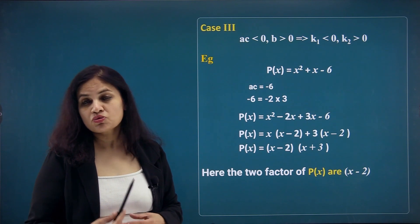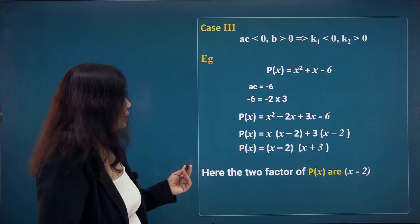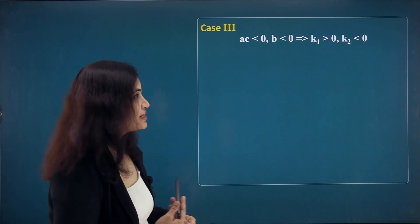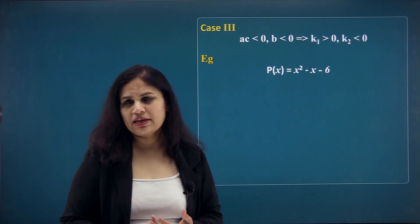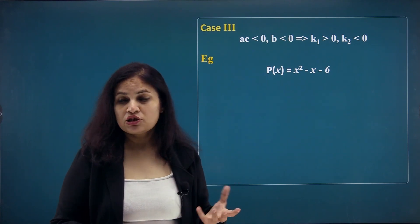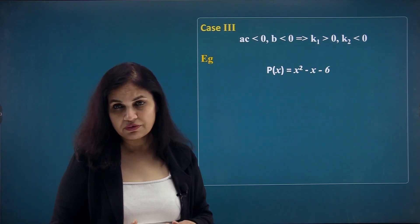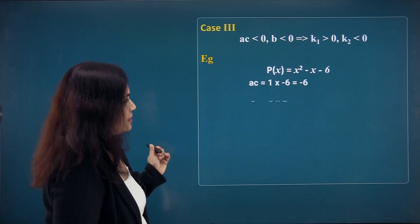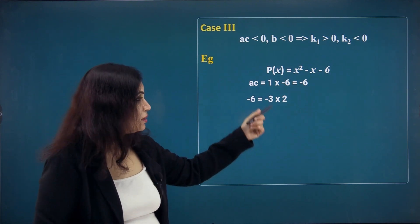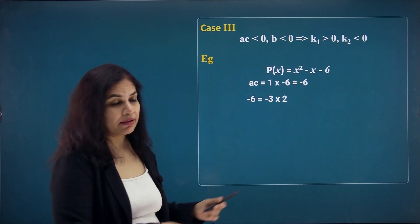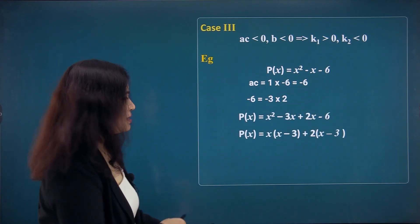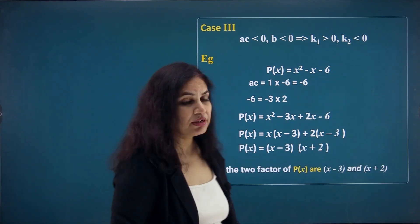Case 4: the product is negative and the sum is also negative. This time we choose the factor with the greater absolute value to be negative. Rewriting ac as (−3) × 2 gives product −6 and sum −3 + 2 = −1. Proceeding in the same way, the factors of p(x) are (x − 3) and (x + 2).